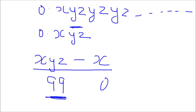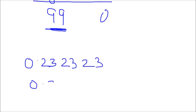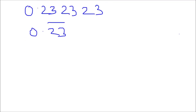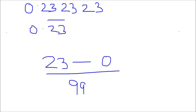Suppose the number is 0.232323. I write it as 0.23 with a bar over 23. In this case there is no digit without a bar. So the rational form is: 23 minus 0, divided by 99 — two 9s because there are 2 digits under the bar — followed by no zeros, since there are no digits without a bar. So the answer is 23 upon 99. This is the proper rational form of 0.232323.